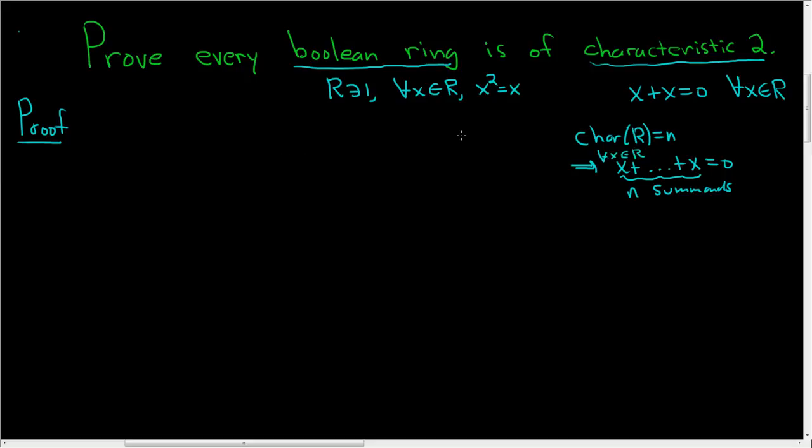So that was kind of rushed. Let's go ahead and do the proof. We have to prove it's of characteristic 2. So we have to prove that x plus x is equal to 0 for all x in our ring. For all x in our ring, the natural thing to do is to start by looking at x plus x.